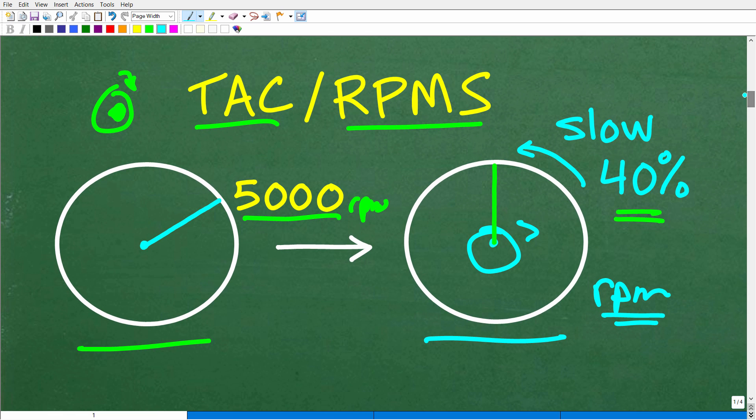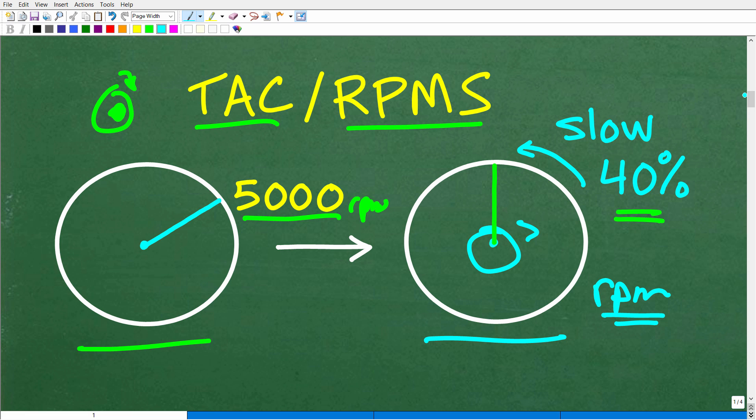Okay, so, again, not to be redundant, we just want to really be clear and visualize, you know, the mechanics of the problem. Okay, so, we're at 5,000 RPMs. We're going to slow down 40%, and then we're going to figure out how many RPMs or how many revolutions the engine will be turning in 30 seconds.